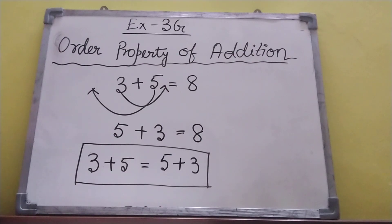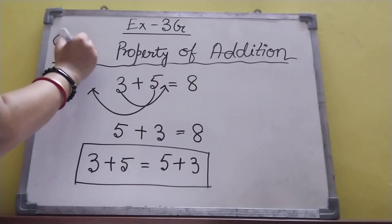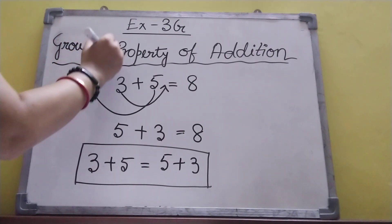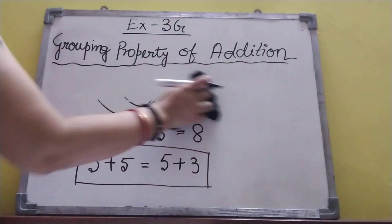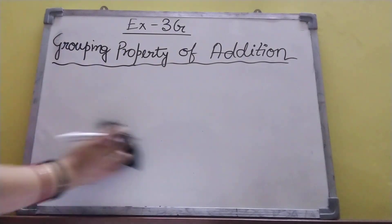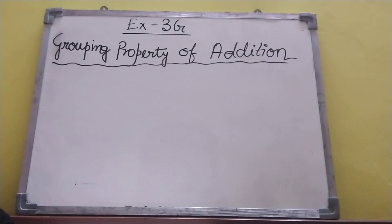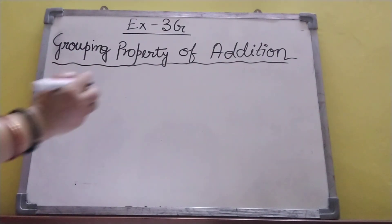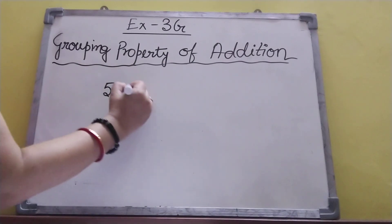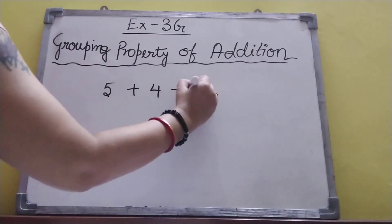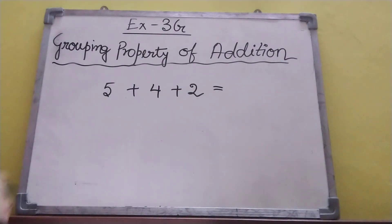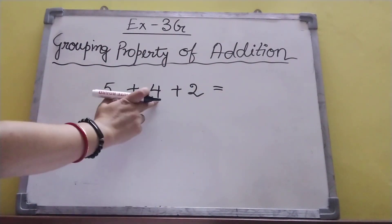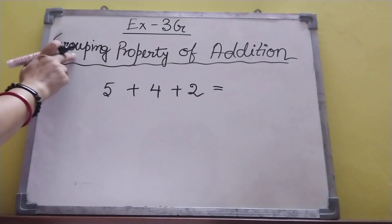Number two is grouping property of addition. If we add more than two numbers, then we use this property. Like five plus four plus two equal to eleven — more than two numbers we are adding, so we will be using this property.